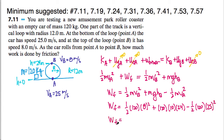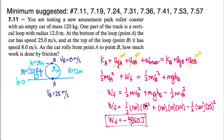Isolating the work done by friction and plugging in all values: W_friction = one-half(120)(8²) + (120)(10)(24) − one-half(120)(25²). When you plug this into a calculator, you get −4,860 joules. This is what we'd expect — the work done by friction should be negative because it pulls energy out of our roller coaster car.